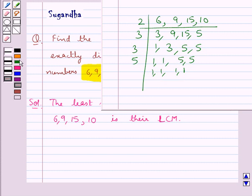So from here we get LCM of the numbers 6, 9, 15, 10 is equal to 2 into 3 into 3 into 5 which is equal to 90.